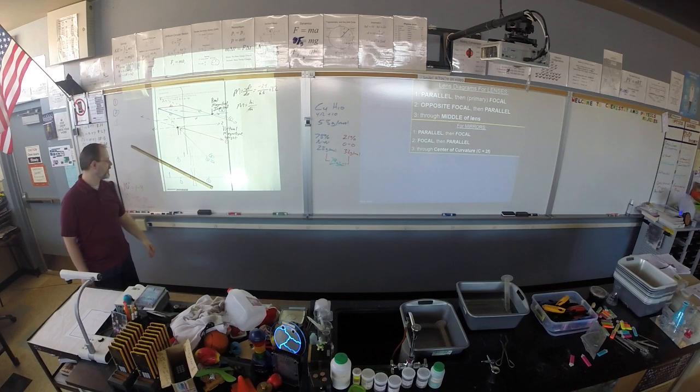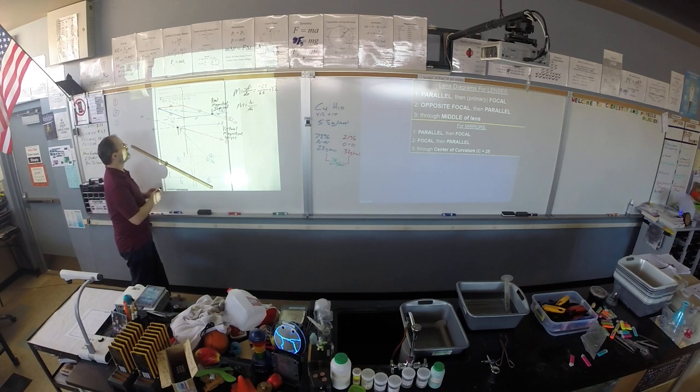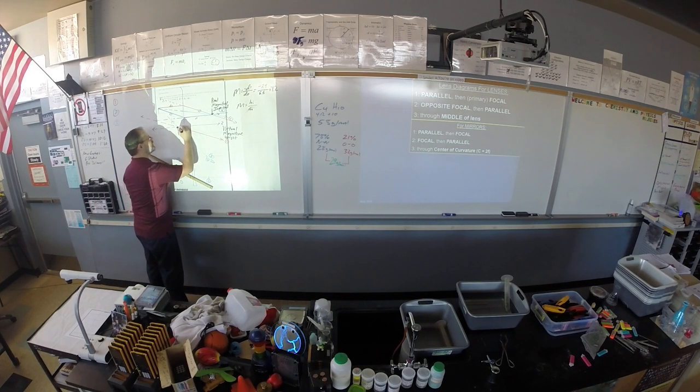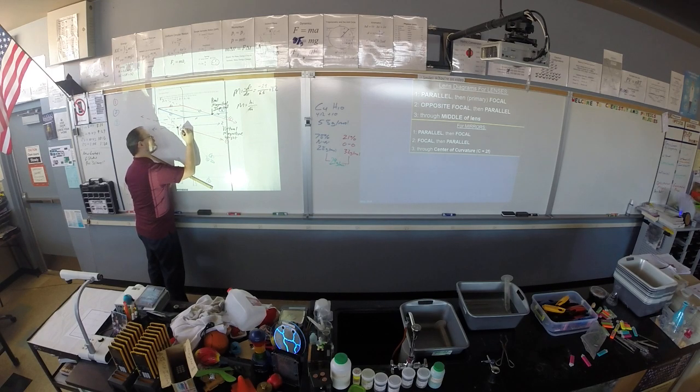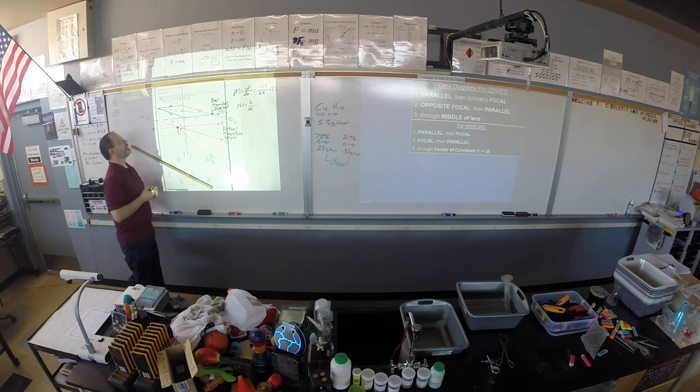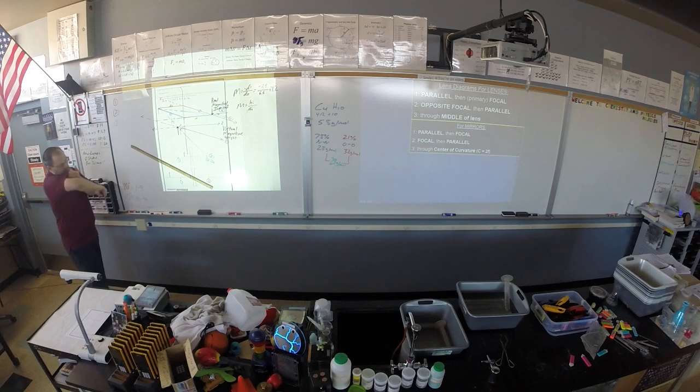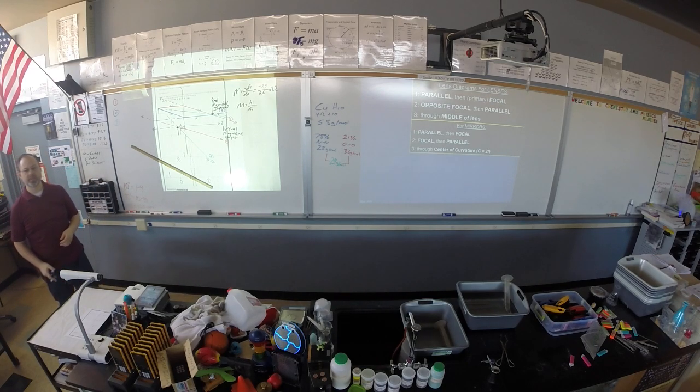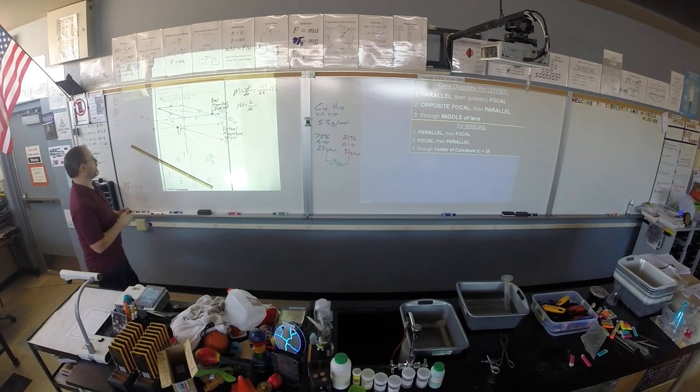Okay, go ahead and measure the DI and the DO. The DI is the distance from normal to the image, and the DO is the distance from the object to the normal. So go ahead and measure those and let's find out what our magnification is.